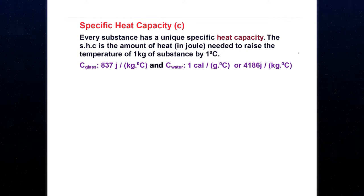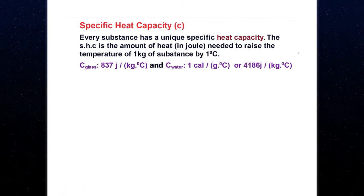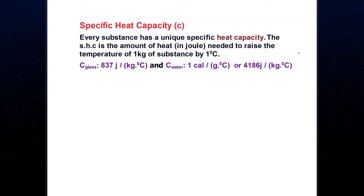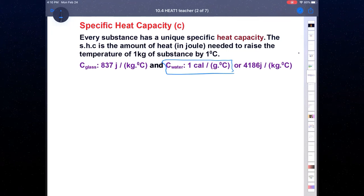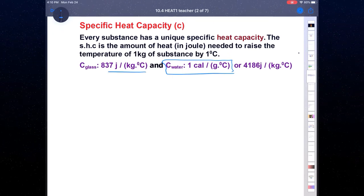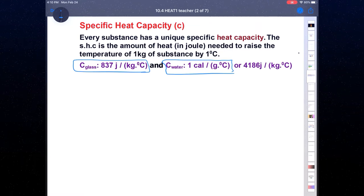Section 2 starts with heat capacity — specific heat capacity. It is the amount of energy needed to raise the temperature of one kilogram of a substance by one degree Celsius. For example, for one kilogram of water, one calorie per gram is needed to raise the temperature. To increase the temperature of glass by one degree Celsius, you need 837 joules per kilogram.